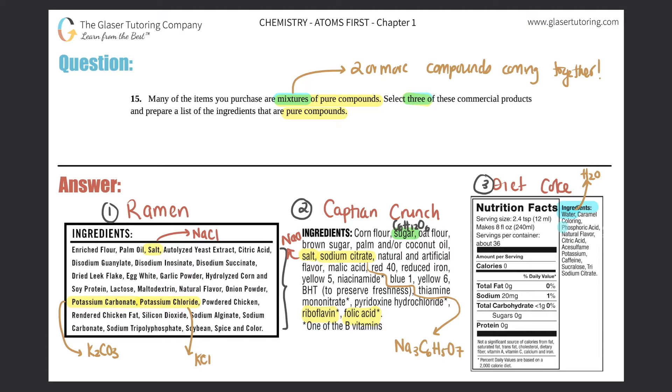They got caramel coloring, phosphoric acid. That's another pure compound. Phosphoric acid, I'm going to put over here, is H3PO4. And then let's see if I scan through these, we also have citric acid. Citric acid is another pure compound.